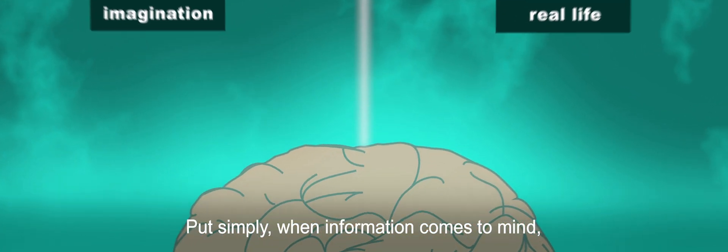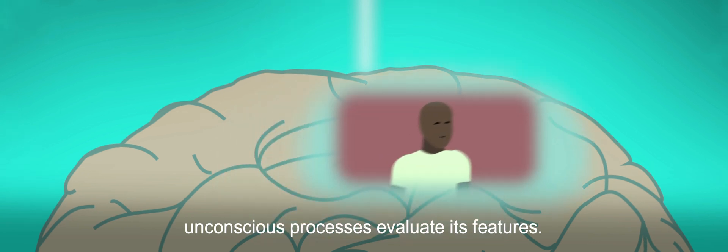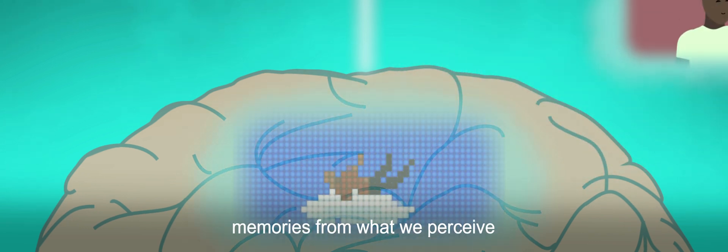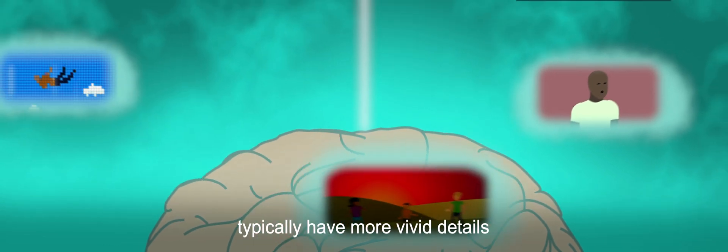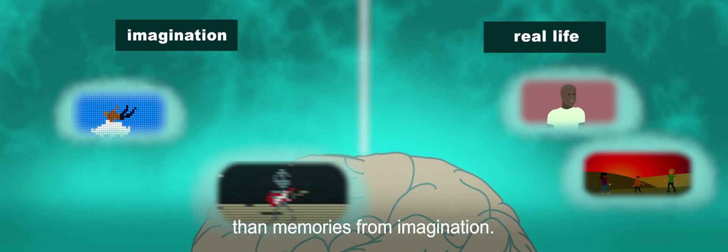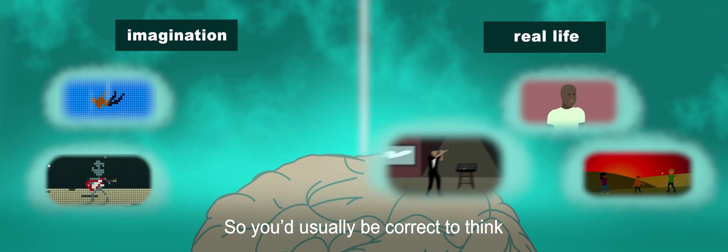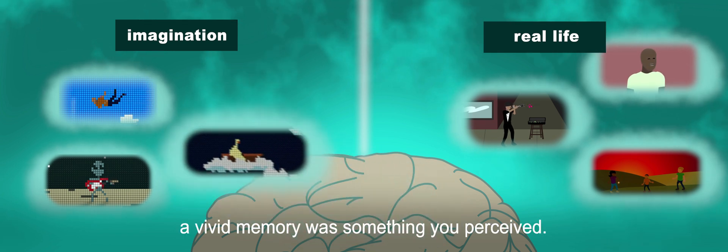Put simply, when information comes to mind, unconscious processes evaluate its features. For example, memories from what we perceive typically have more vivid details than memories from imagination. So you'd usually be correct to think a vivid memory was something you perceived.